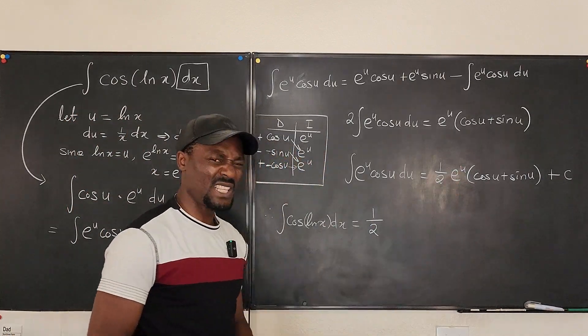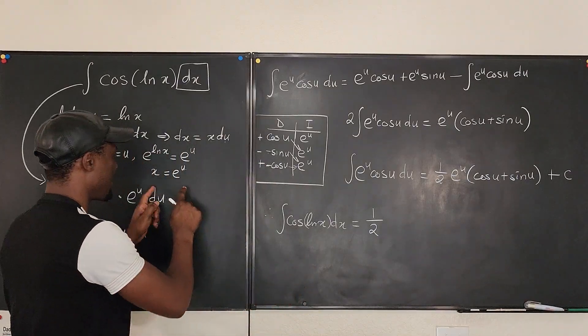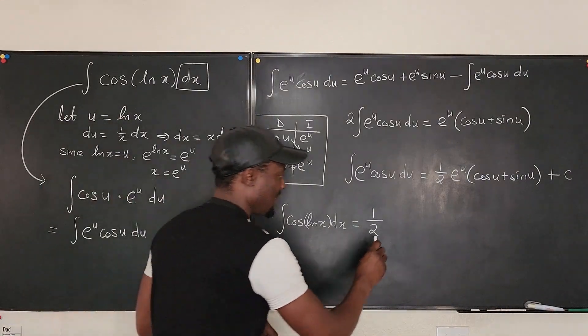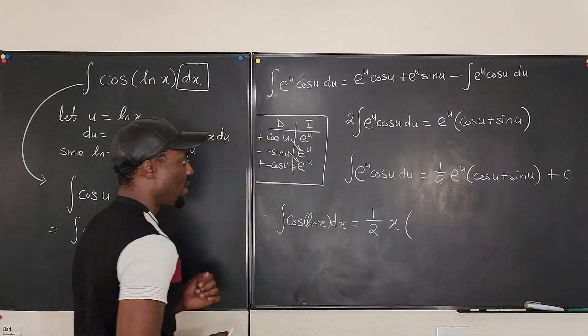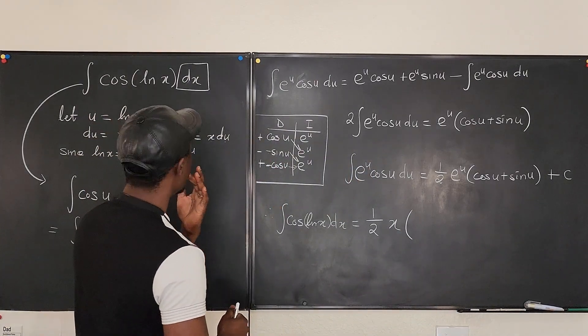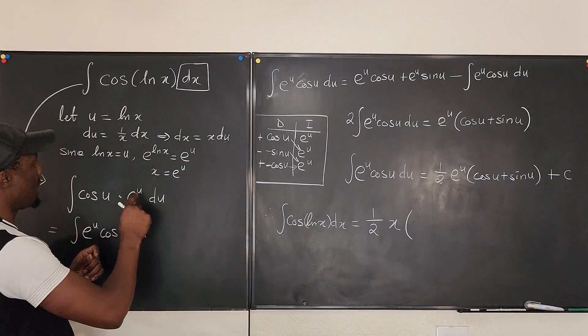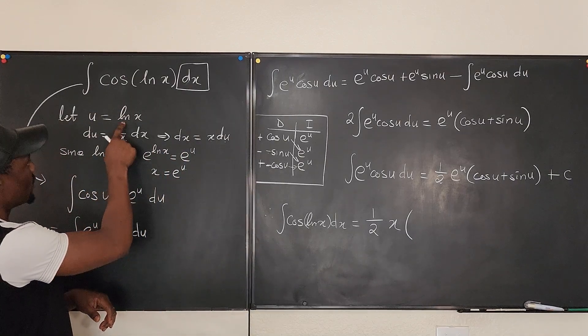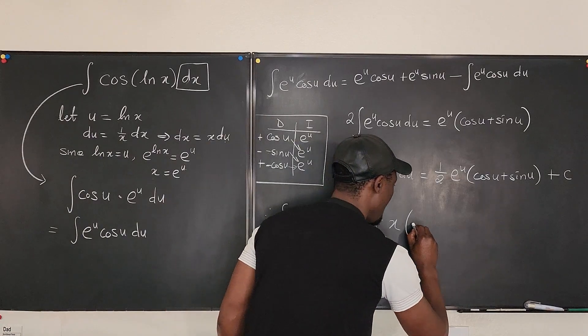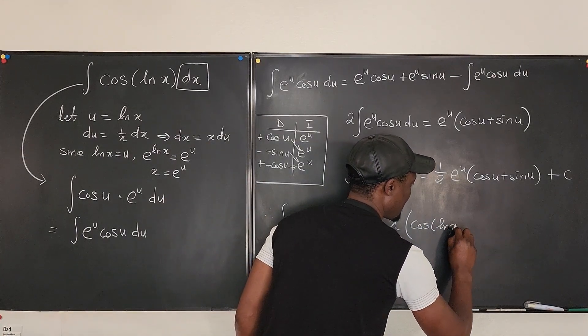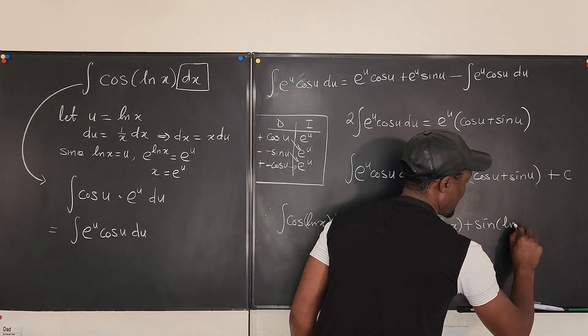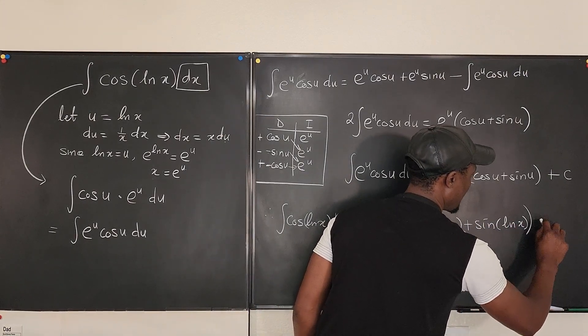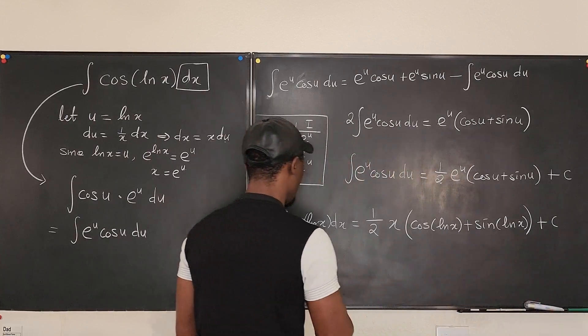Of e to the u—what is e to the u? Let's go back. e to the u was x, multiplied by—what is cosine u? Cosine u is the cosine of what was u again? u was ln x, so it's going to be cosine of ln x plus sine ln x plus C.